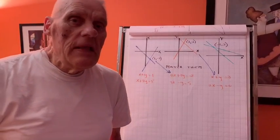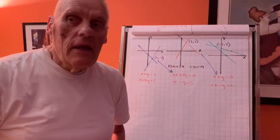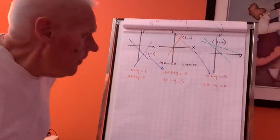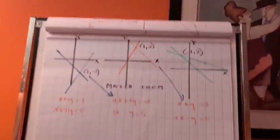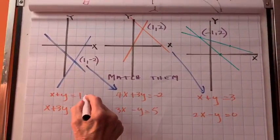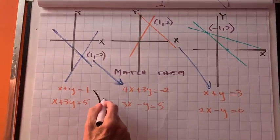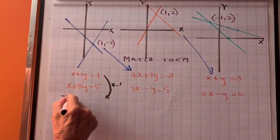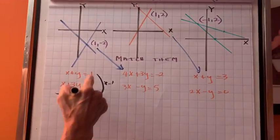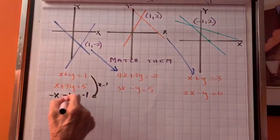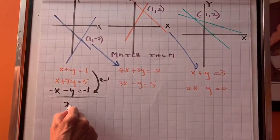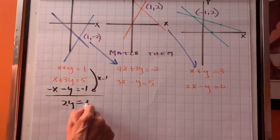Okay, same three diagrams that we did in the last lesson. This time we're going to use elimination to solve the problem. First thing I'm going to do over here, I'm going to multiply this by negative one. This becomes negative x, this becomes negative y, this becomes negative one. Now we're going to add two y equals four.